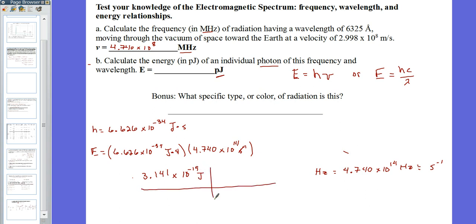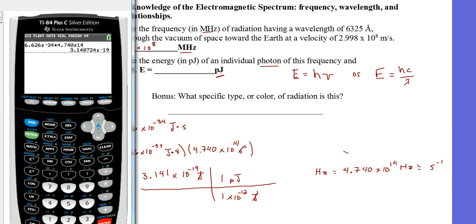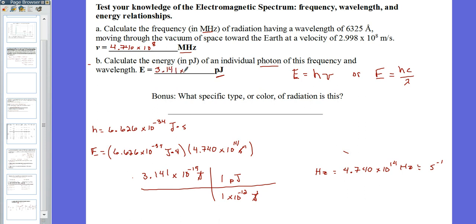That's not your final answer because you have to convert to picojoules. Pico is 10^-12, so there are 10^-12 joules in a picojoule. Take your previous answer and divide by 10^-12. Now you have 3.141 × 10^-7 picojoules.